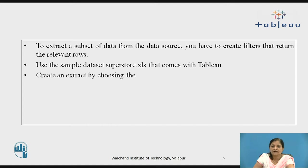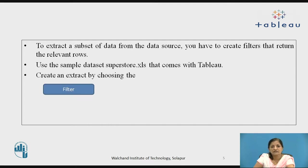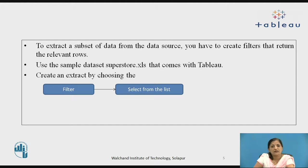To extract a subset of data from the data source, you have to create filters that return the relevant rows. Let us consider the sample dataset superstore.xls that comes with Tableau. Create an extract by choosing the filter option and in filter, you have to select from the list. When you click on select from the list, various fields are displayed — a checklist of the fields is displayed. From that checklist, you have to select the fields that are to be extracted from the data source.